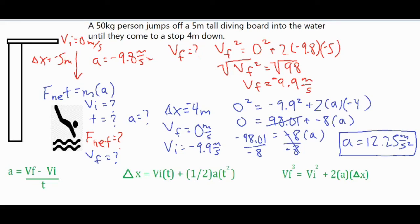Now we are pretty much done with our calculation. We want to finish off by using our F net formula. And we know that F net equals mass times acceleration. The mass of 50 kilograms was given in the initial question. And we have our net acceleration of 12.25 meters per second squared. We can go ahead and multiply those two, and then we get 612.5 newtons.